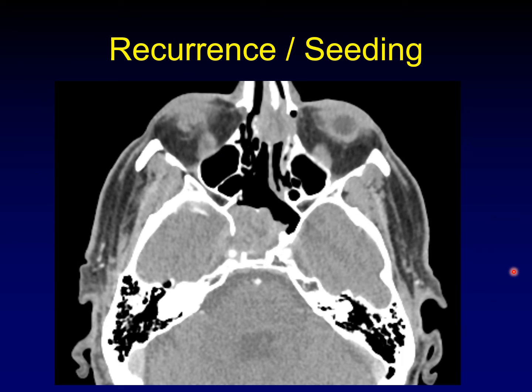Regarding recurrence, one worries about recurrence at the site of the surgery and at the site of the tumor — much of our surveillance imaging is focused on finding that recurrence. This is a recurrent chordoma at the surgical site. But you also have to worry about tumor seeding along the surgical track. For example, this recurrence seeded along the track of an expanded endonasal approach — metastatic chordoma seeded along the surgical track as well as a recurrence at the primary site. It is very important to image the entirety of the area that underwent surgery to ensure you don't overlook seeding.